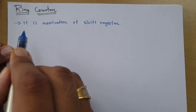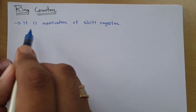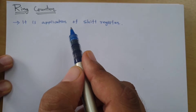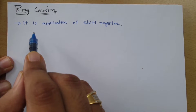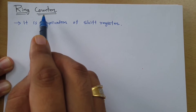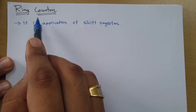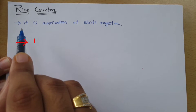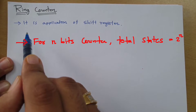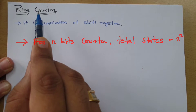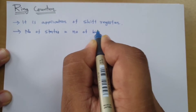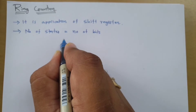A ring counter is an application of a shift register. I'll also explain how we can make a ring counter by using a shift register. This counter is a bit different compared to the normal counter we have seen. In a normal counter, if you have n number of bits, then total states will be 2 to the power n. But when we talk about a ring counter, the number of states equals the number of bits, which also equals the number of flip-flops.